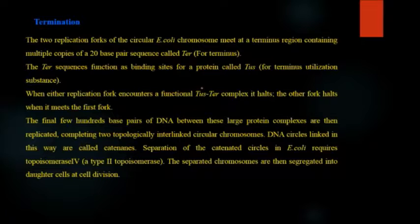DNA circles linked in this way are called catenanes. Separation of the catenated circles in E. coli requires topoisomerase 4 which is a type of topoisomerase 2. The separated chromosomes are then segregated into daughter cells at the time of cell division.